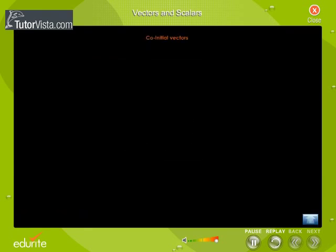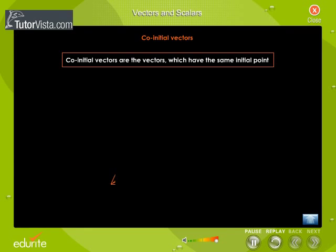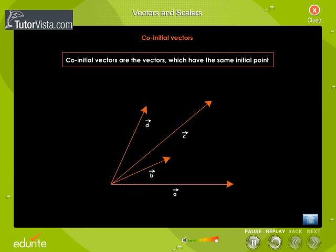Co-initial vectors are the vectors which have the same initial point. Shown here are four co-initial vectors A, B, C and D.